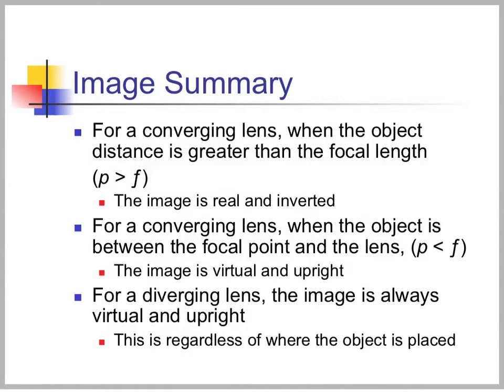To summarize: for a converging lens when the object distance is greater than the focal length, the image is real and inverted. For a converging lens when the object is between the focal point and the lens, the image is virtual and upright. For a diverging lens, the image is always virtual and upright regardless of where the object is placed.